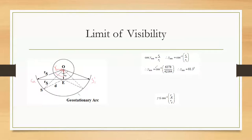Taking an example of a geostationary satellite: radius of the earth is 6378 km and the orbital radius is 42,164 km. We find that gamma max is 81.3 degrees. So the maximum that an earth station can see is from 81.3 degrees west to 81.3 degrees east.